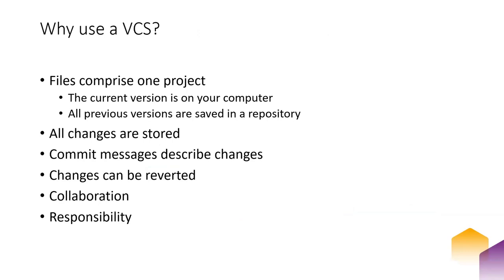Some benefits of a VCS: a base version of the project exists and the system saves all subsequent changes. Commit messages describe changes made, so we don't call a file 'final version two thesis' — we just save it as 'thesis' and describe changes at any point. If we mess up, we can retrieve earlier versions. A good system allows other users to copy or fork our work and submit their own changes with permission. We can also determine who wrote an individual line of code or text.